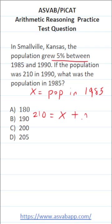So that's going to be 0.05, the decimal equivalent of 5%, times X, its population in 1985.